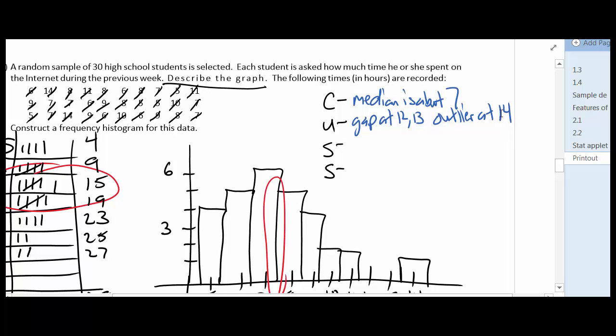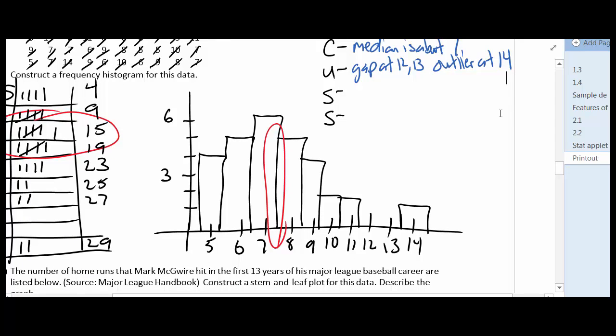Then we have S and S. So one S stands for shape. The other one stands for spread. So shape, we already said it's skewed. And now we can add a direction to that. So it's actually skewed right. Skewness, of course, is defined by the tail of the data. And the last one is spread. Now spread could be standard deviation, it could be IQR, it could also be range. And since I'm not basing this off the numbers, I've based it off the picture. I'm going to say that the range is from 14 minus 5. So that means that the data has a range of 9.